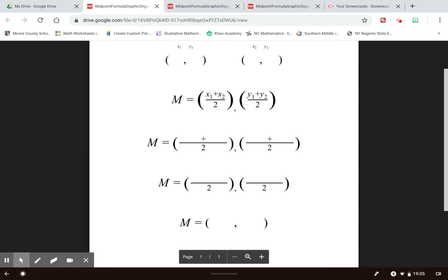So the way the midpoint formula works is we begin with a set of ordered pairs. I'm going to start with negative 2, negative 8 as my one ordered pair, and then my other ordered pair is going to be 6, negative 8.